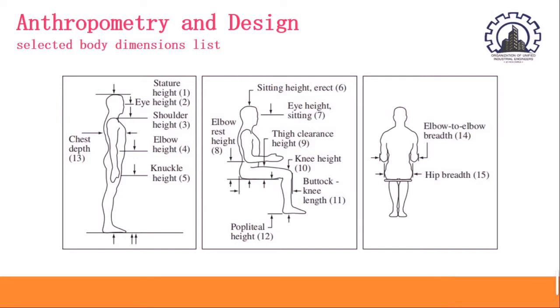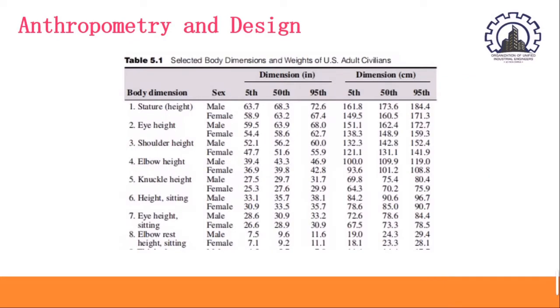Much of this anthropometric data is included in computerized human models, such as Combiman, Jack, Mannequin Pro, and SafeWorks that provide easy size adjustments and limitations in ranges of motion or visibility as part of the computer-aided process.